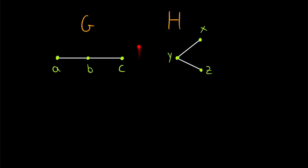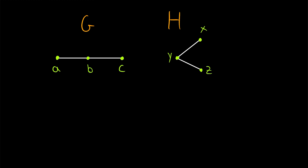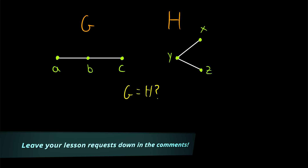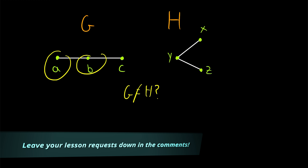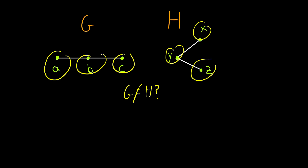Here we've got two graphs, a graph G and a graph H. Are these two graphs the same? Does G equal H? Well, certainly not, because they have different vertices: A, B, C versus X, Y, Z, so they're not equal.